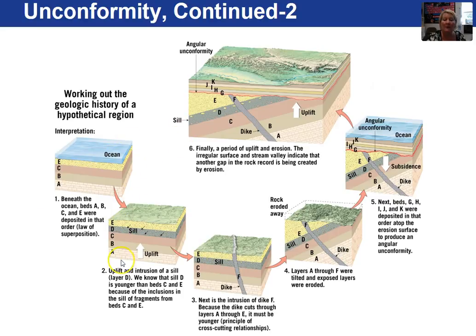Adding to this relative age dating, we had said that A was deposited first, then B, C, and E. Now we have a sill that has intruded between C and E, so it would have occurred after E had been deposited. Then we've added another igneous intrusion, F, which would occur after the sill because it is crossing the sill.